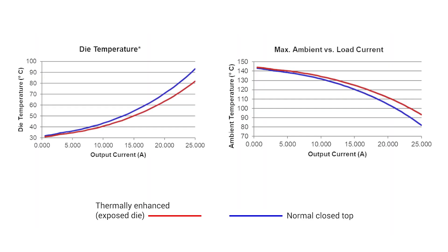With just the addition of the heatsink, the thermally enhanced TPS543B25T showed an approximate junction-to-ambient thermal resistance improvement of 4 degrees Celsius per watt over the standard package.